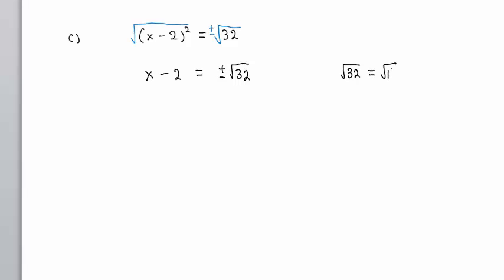Now, let's work on the square root of 32. That is the square root of 16 times the square root of 2, which is 4 square root of 2. So we have x minus 2 equals positive or negative 4 square root of 2. We add 2 to both sides of the equation, but the 2 is not a like term with this 4 square root of 2.